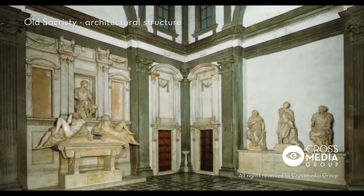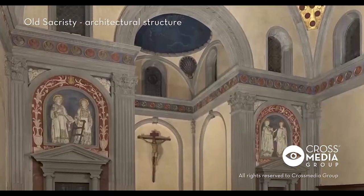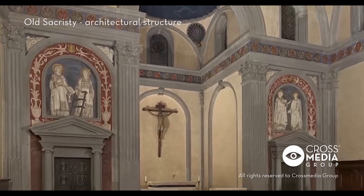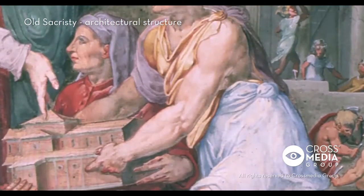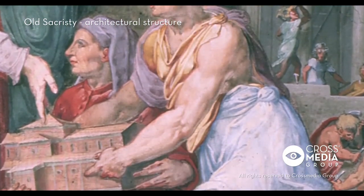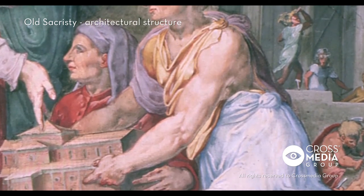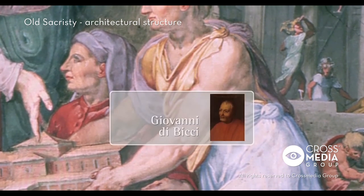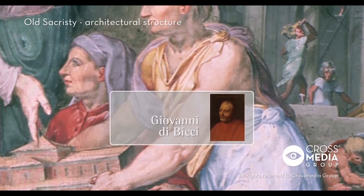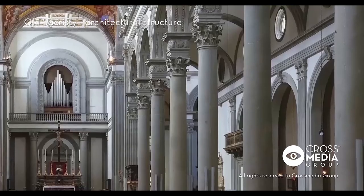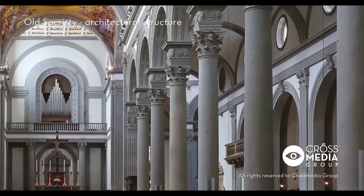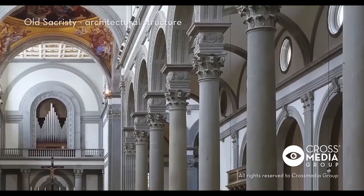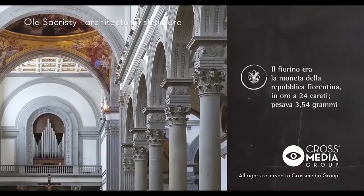In the same years in which the chapter of San Lorenzo was looking for funds to enlarge the church, Giovanni di Bici, the man who originally founded the Medici fortunes, turned to Brunelleschi, by then the city's best known architect, for his family chapel. The design presented to him already contemplated the idea of a new transept. Giovanni was enthusiastic about Brunelleschi's ideas and decided to finance all the work. The work was completed in 1428 and Giovanni di Bici's funeral was celebrated there the following year for the exorbitant sum of around 3,000 gold florins.